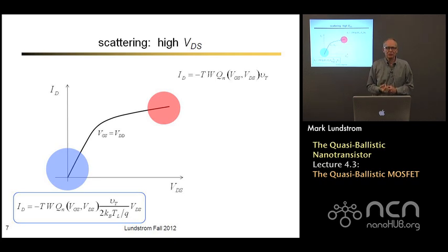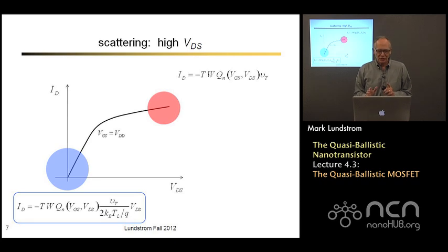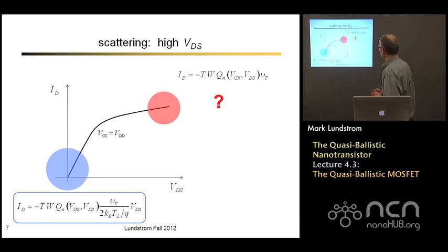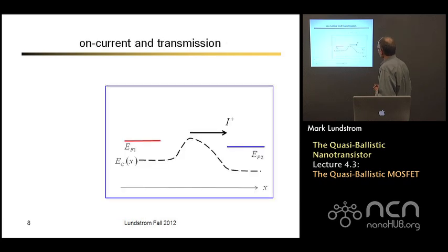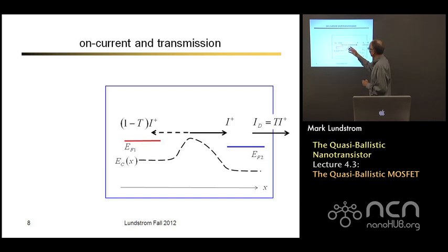Let's look at the high drain bias regime — that's not quite this simple. The first thing we might think of doing is simply multiplying our ballistic result by the transmission, but it turns out there's a little more to it than that. Here's our physical picture: electrons are injected from the source, this positive flux propagates across and some fraction T comes out — that's our drain current.